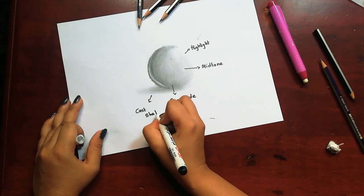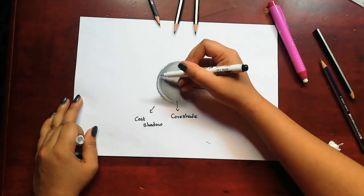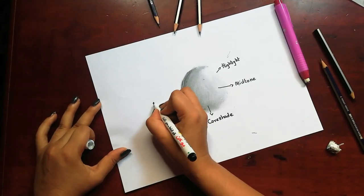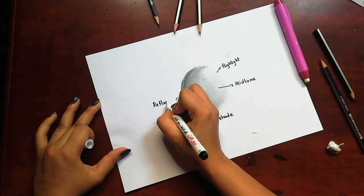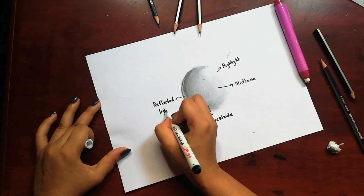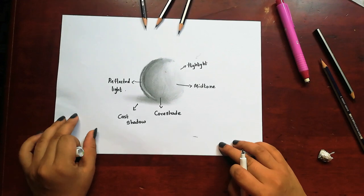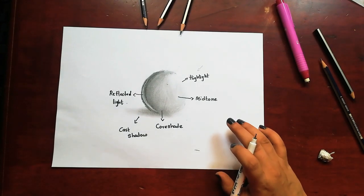You can see that white part over there, that's the reflected light which is bouncing back. These are the layers that add value to an object.